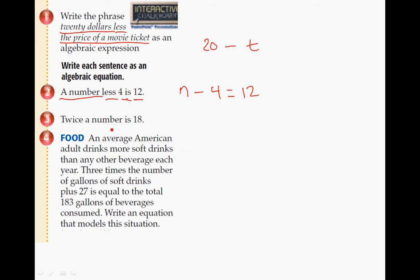Twice a number is 18. We have twice, so we know it's going to be 2 times. A number, well, let's call it X this time, is, which is equal, and 18. And there's your equation.